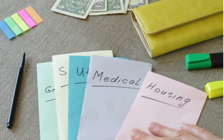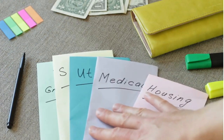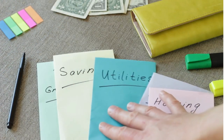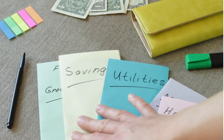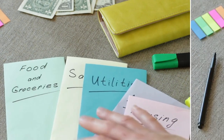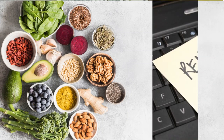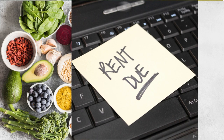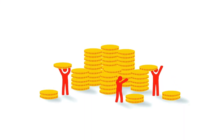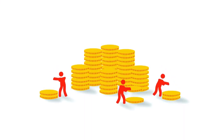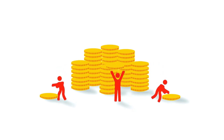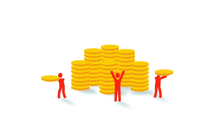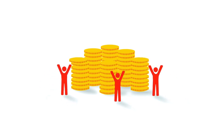For example, think of a budget as your financial plan. You decide how much to spend on things like food, rent and entertainment. Finance helps you to budget effectively so you don't overspend and have money left for savings or treats.